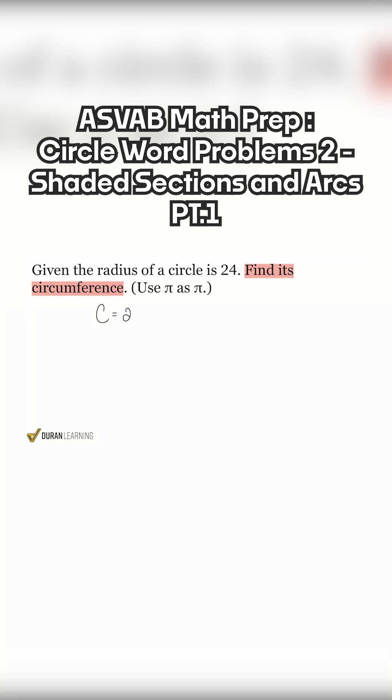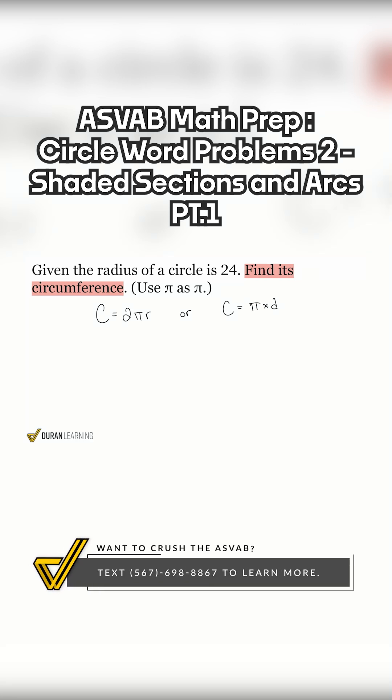The first one being circumference equals 2πr and the other one is circumference equals π times d. Now, just like I said before and as a nice gentle reminder.